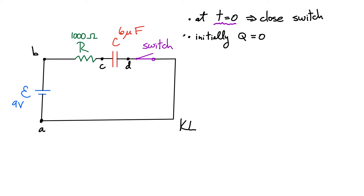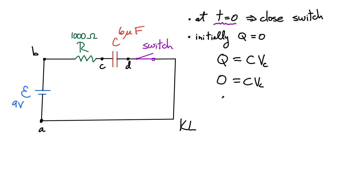To get things started, at time equals zero I'm going to close this switch over here. Initially my capacitor had no charge on it. Remember this basic relationship: the charge on the plates versus the voltage across the plates is our capacitor equation Q = CV, where V_C is the voltage across the capacitor plates. So at time equals zero, if Q is zero, that can only be true if the voltage across the capacitor is also zero. And then after closing the switch, it's going to start charging up.